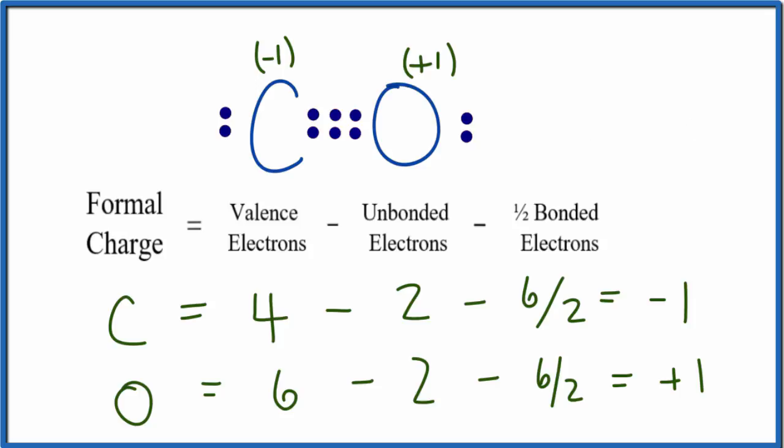We'd like them to be closer to zero if possible. There really isn't another way to write this Lewis structure where we use all ten of the valence electrons and complete the octets for carbon and oxygen. So this is the best we can do, and these are the formal charges on carbon and oxygen in the carbon monoxide molecule.